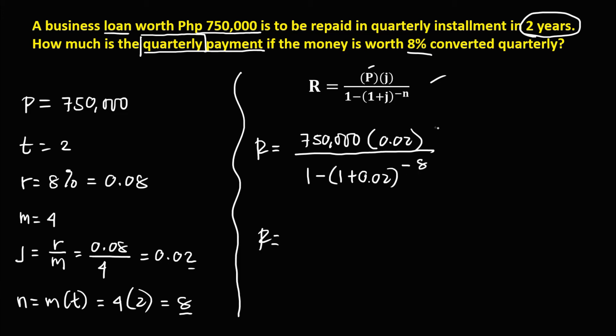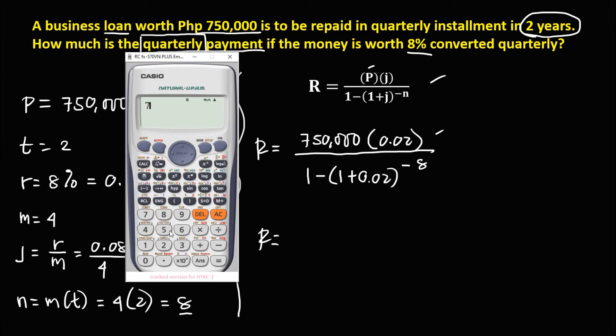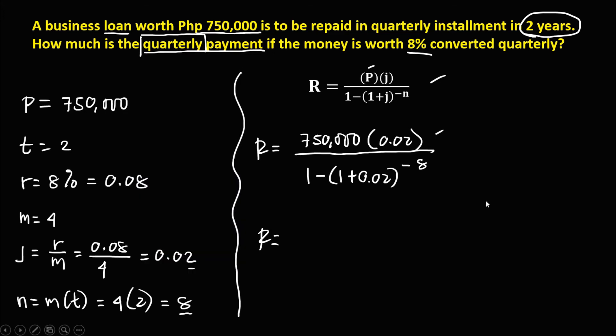So we need to simplify this one first. We have 750,000 times 0.02, equals 15,000. So this one is 15,000, then over, for this denominator.